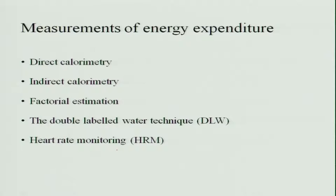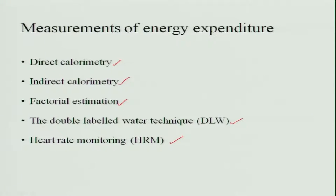Measurement of energy requirement or energy expenditure is measured by direct calorimetry, indirect calorimetry, factorial estimation, doubly labeled water technique, and heart rate monitoring. These are the 5 methods for measuring the energy requirement.